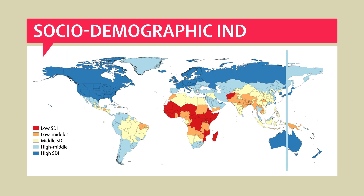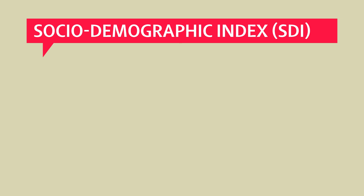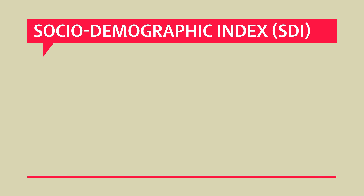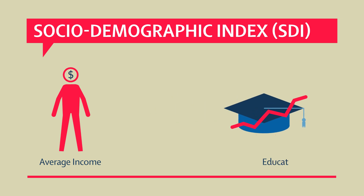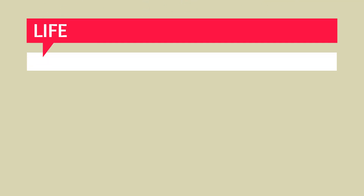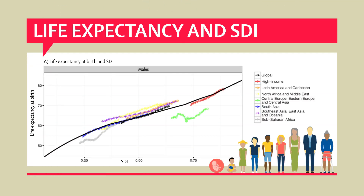New results from the 2015 Global Burden of Disease study categorize regions according to the Sociodemographic Index, or SDI — a new index combining three predictive indicators of health outcomes: average income, education, and fertility rates.